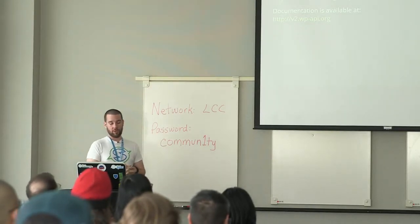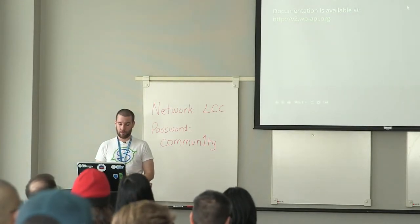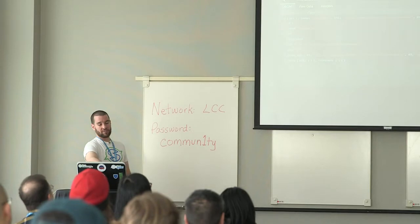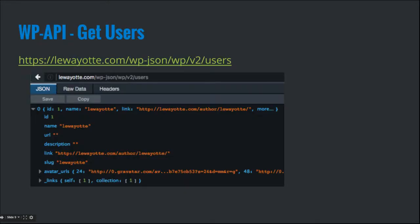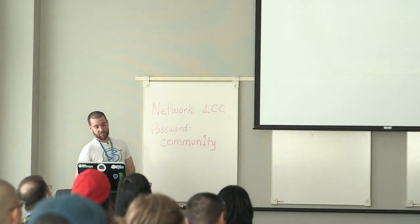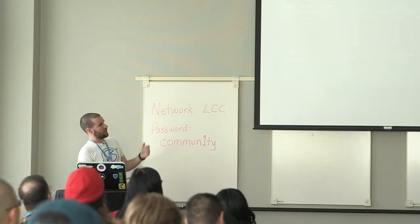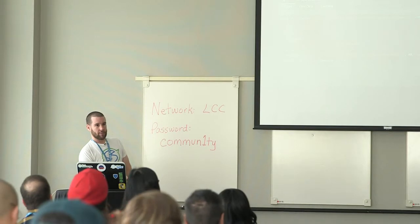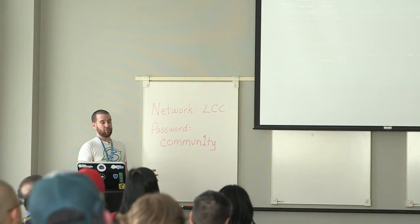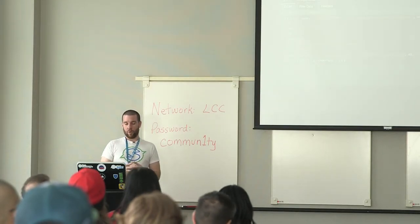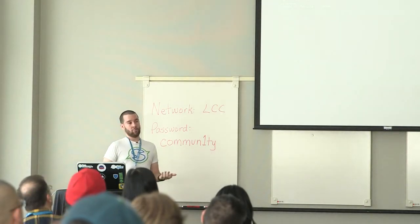Documentation is available at v2.wp-api.org — v2 stands for Version 2. Here's an example of how you get users with WP API. They use a permalink structure in their plugin, so on your site, if the plugin is activated, the endpoint would be yoursite.com/wp-json/wp/v2/users. The output is different from the custom REST API output — they clean it up, for example removing the password hash, since there's no real reason to expose that. They also add things like the avatar URL. You can extend it if you need more or less information.